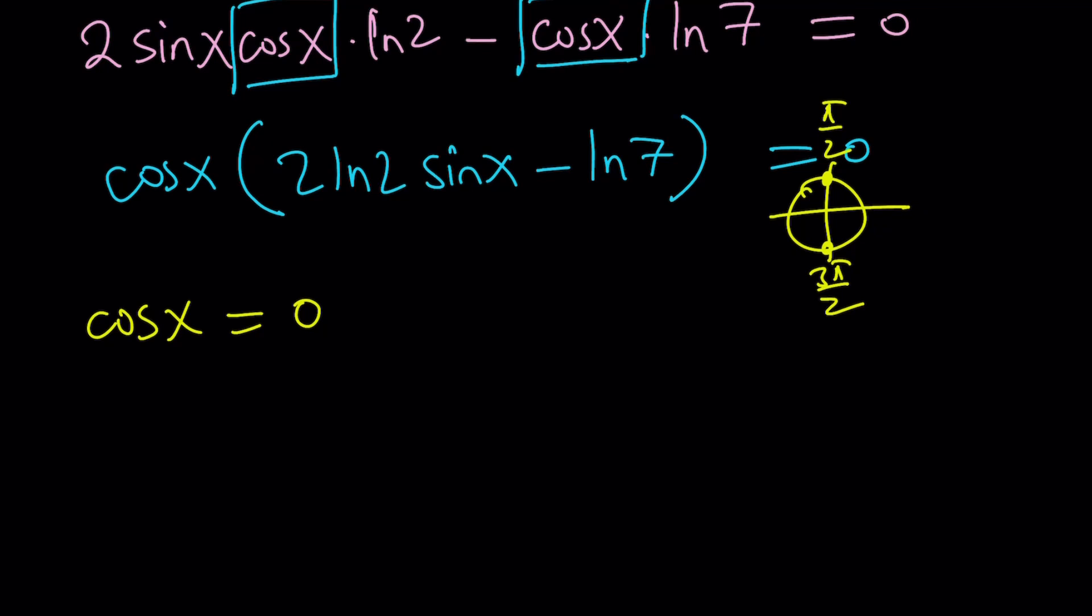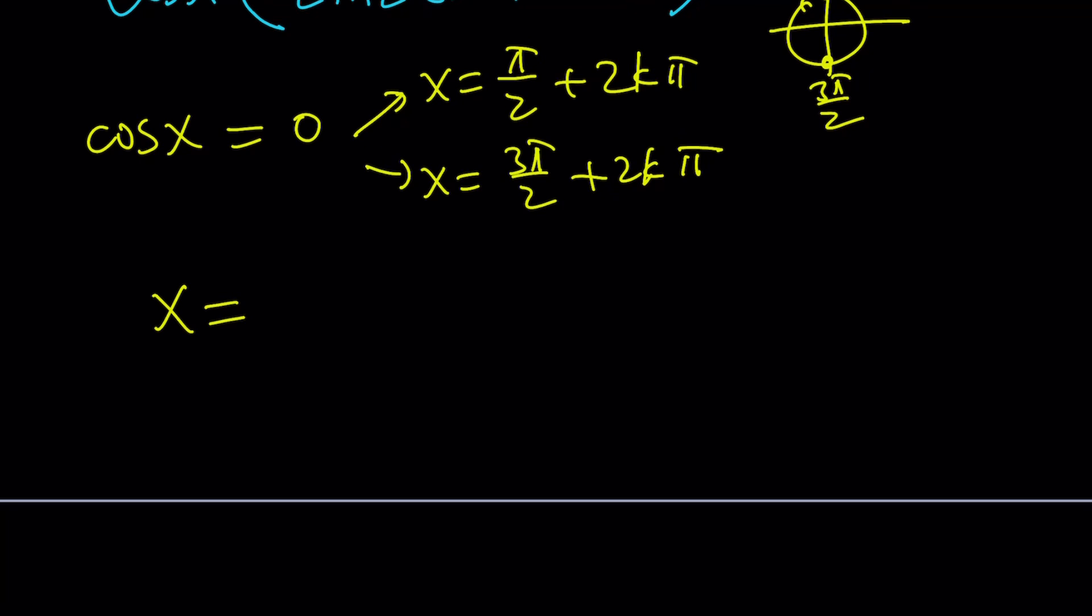So I can go ahead and write it down. But if you're talking about a general solution, you can write this as two separate solutions: x equals pi over 2 plus 2k pi, and x equals 3 pi over 2 plus 2k pi. Or you can merge these together and write x as pi over 2 plus m pi.